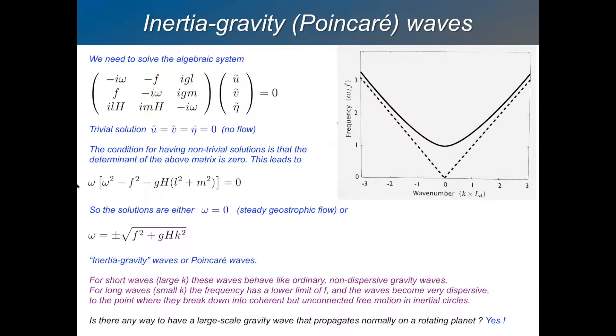well, first of all, you can see that there is a omega equals zero solution here. If omega equals zero is a solution, it's a solution where there's no oscillation in time. So it's a standing wave. There's a wave structure, but it's not propagating and it's not oscillating. It's just steady geostrophic flow.